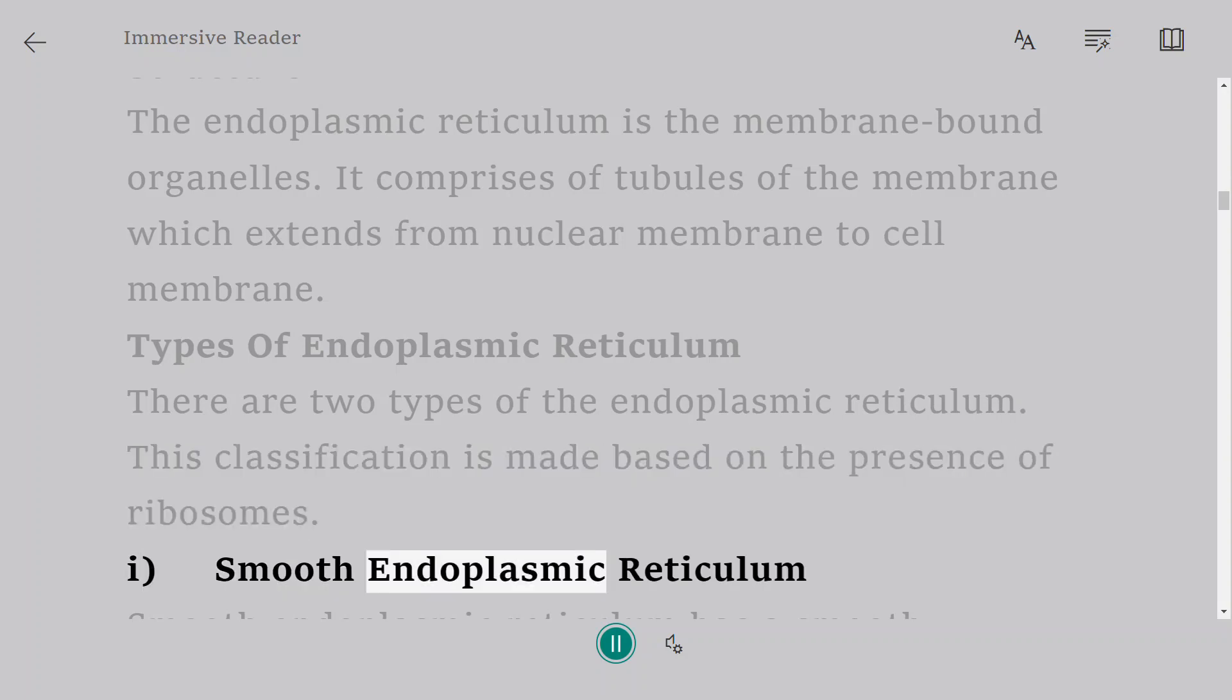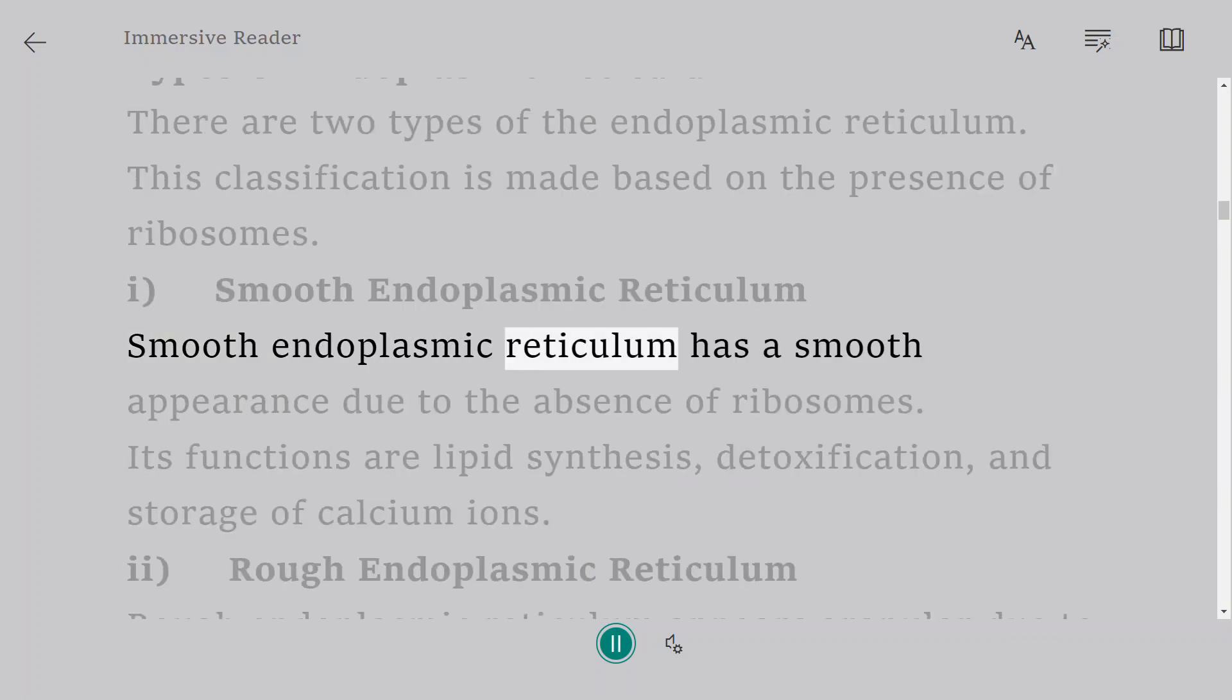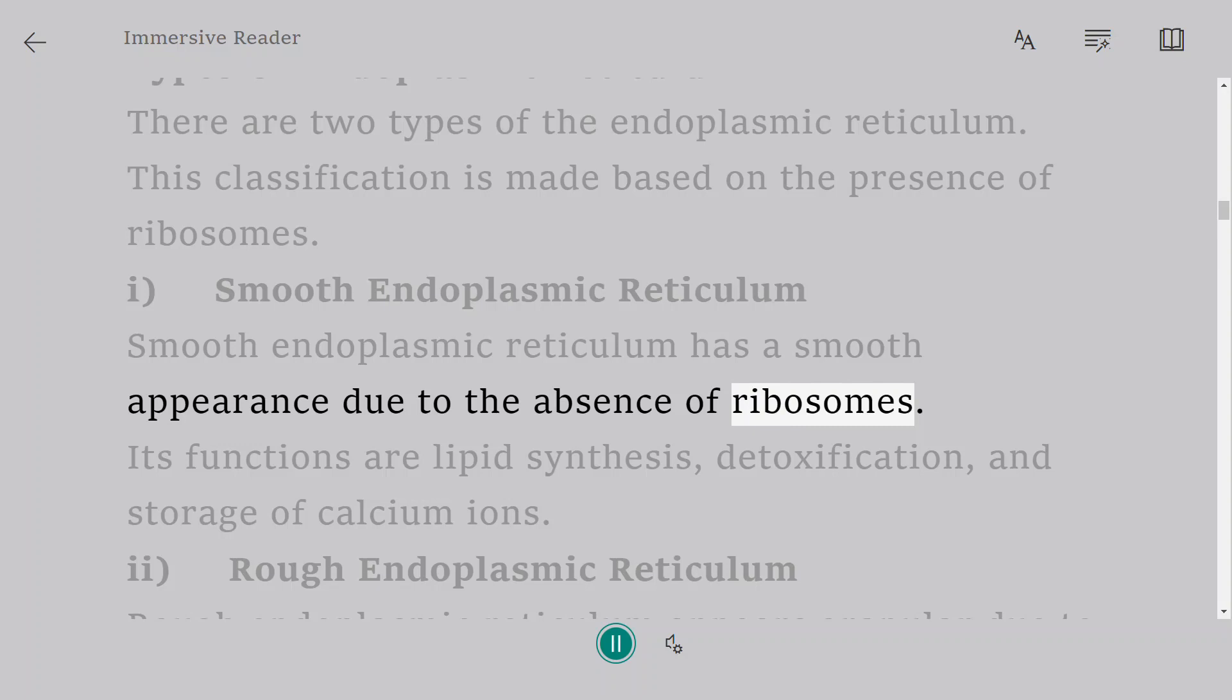i. Smooth endoplasmic reticulum. Smooth endoplasmic reticulum has a smooth appearance due to the absence of ribosomes. Its functions are lipid synthesis, detoxification, and storage of calcium ions.